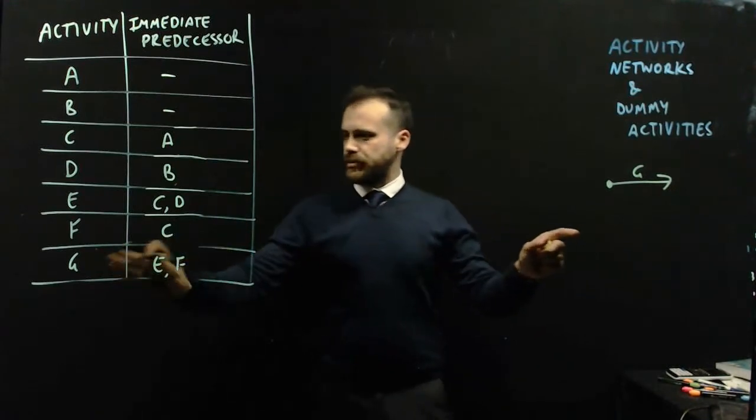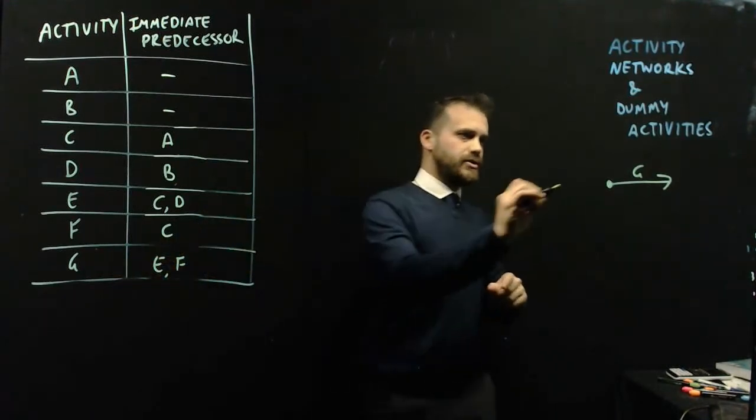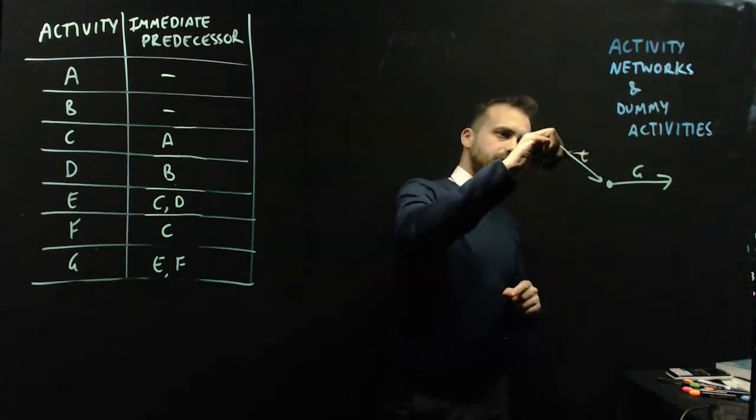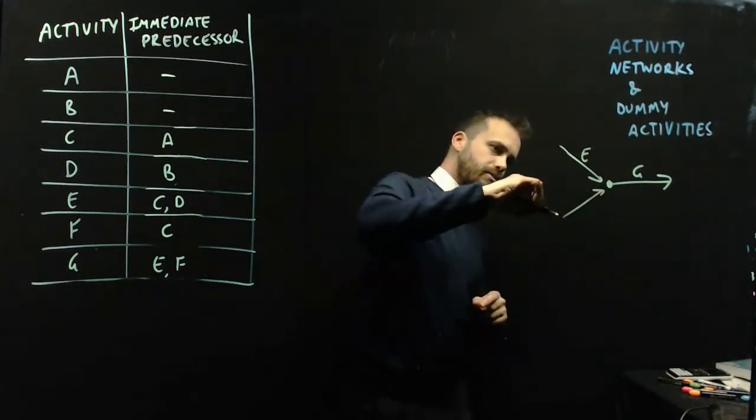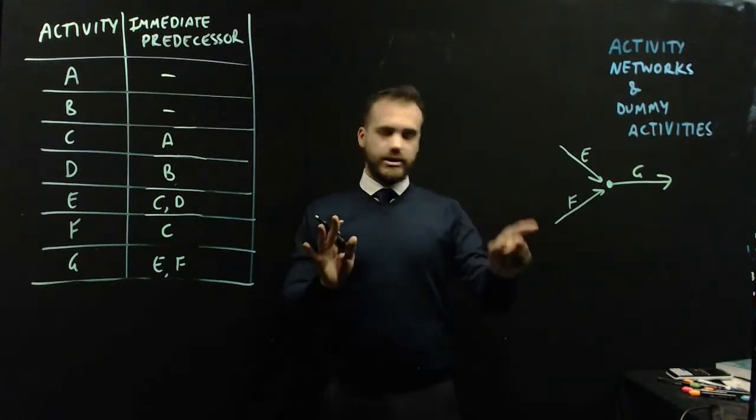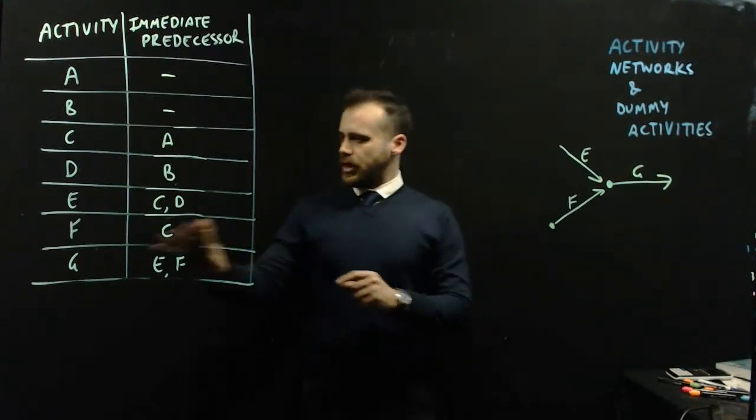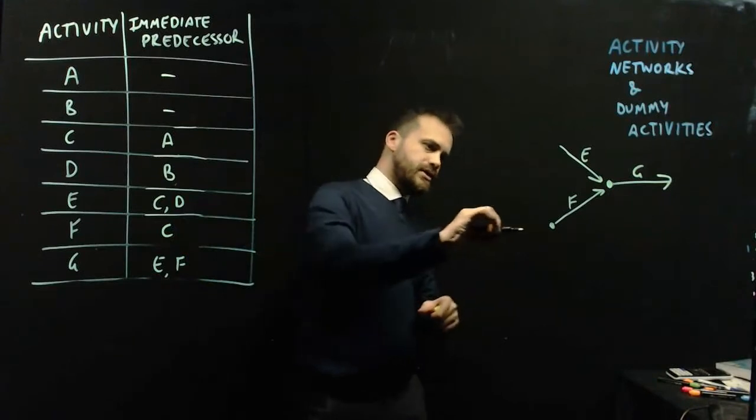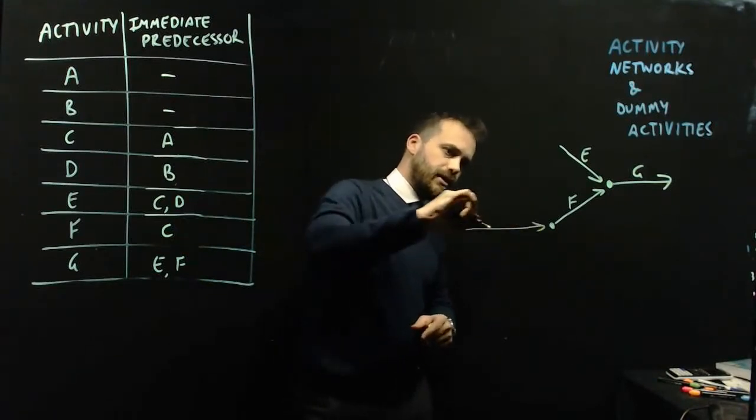The predecessor before G is E and F. So I'll set that one up there as E and set this one up here as F. Now let's deal with F. F has an immediate predecessor of C. So I'll do that one there like that.